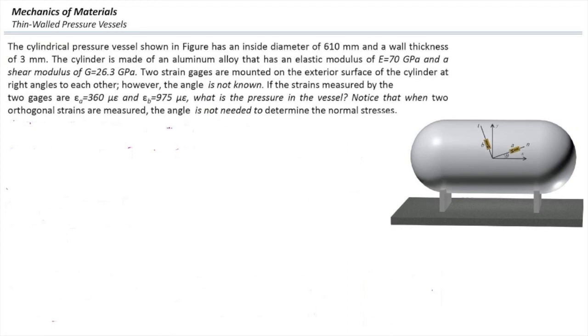It's made from aluminum alloy that has a modulus of elasticity of 70 GPa and a shear modulus of 26.3 GPa. Two strain gauges are mounted on the exterior surface of the cylinder at right angles to each other. However, the angle theta is not known.